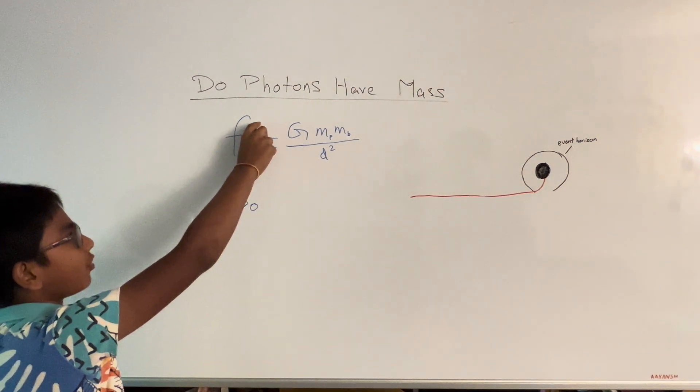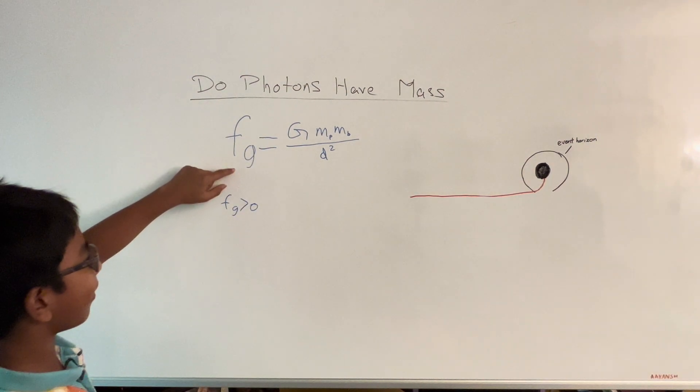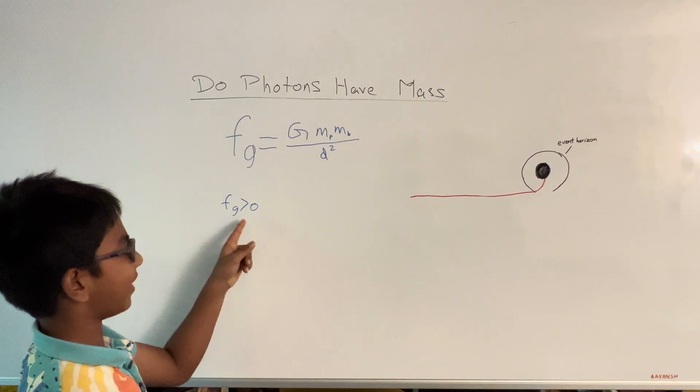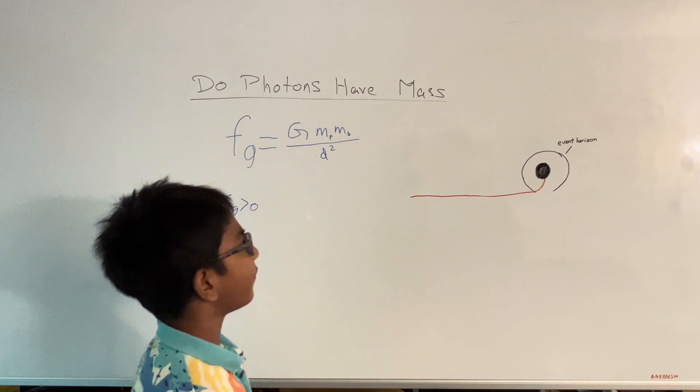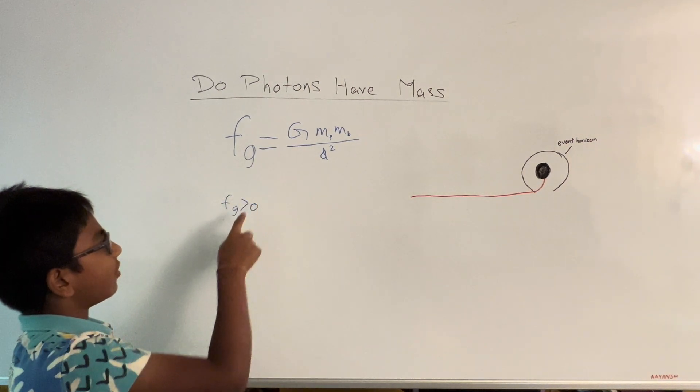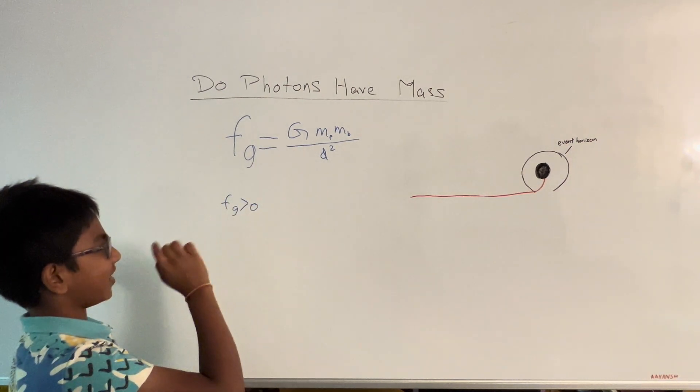But that can't be true because we know that the force of gravity has to be greater than zero. So the photon must have a slight mass to make the force of gravity not equal to zero.